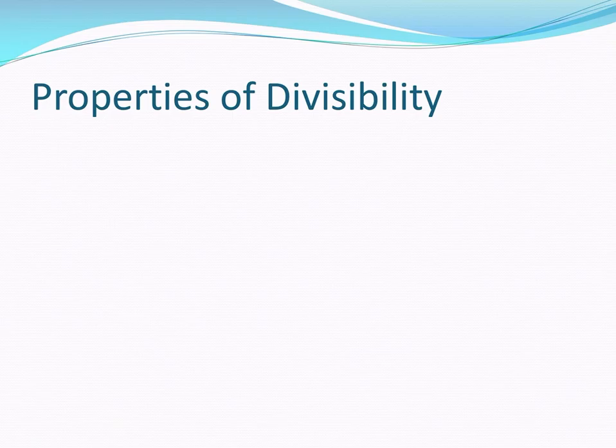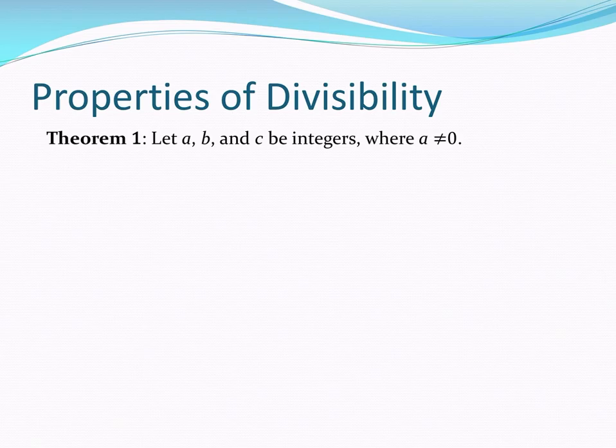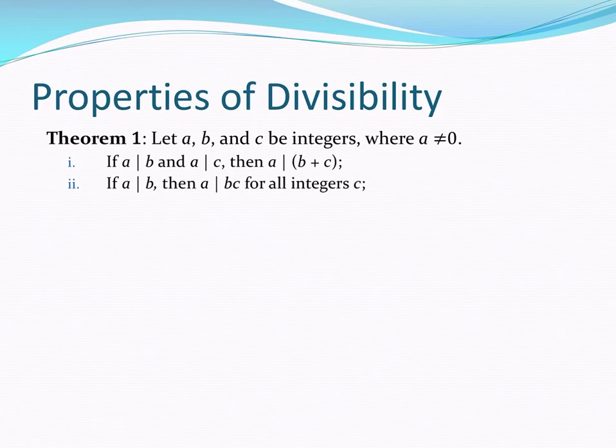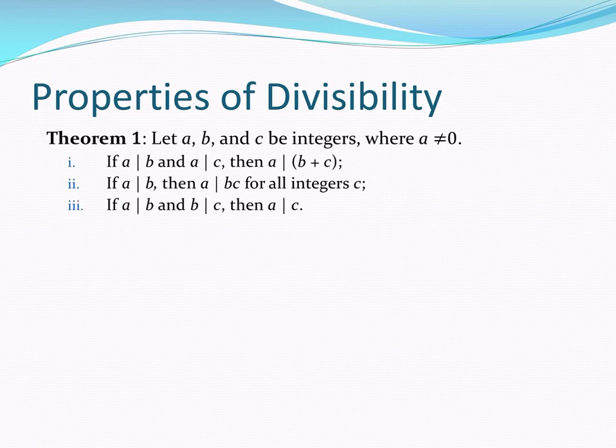All right, so let's talk about divisibility's properties. We have a theorem to state. Theorem 1: we've got A, B, and C integers and A non-zero. The theorem has three parts. The first part says that if A divides B and A divides C, then A divides their sum. The second part states that if A divides B, then A divides B times C for all integers C. And the third part states that if A divides B and B divides C, then A divides C.